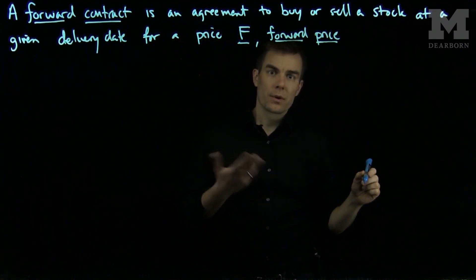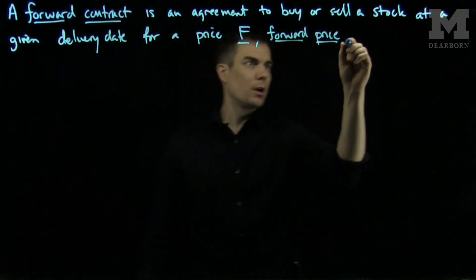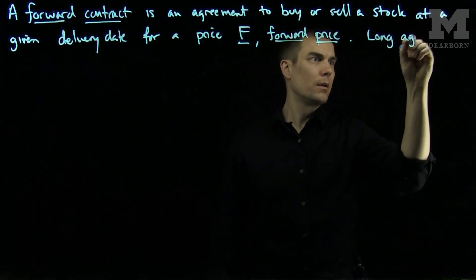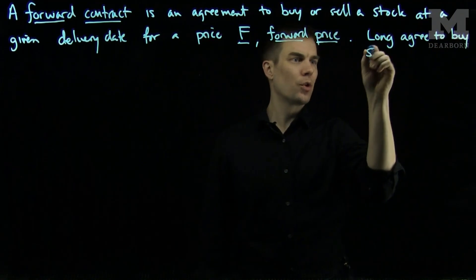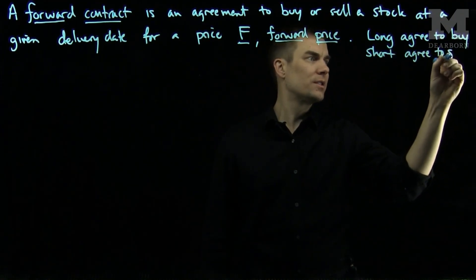So let's see how these forward contracts work. There are two types of forward contracts: long when you agree to buy and short where you agree to sell.